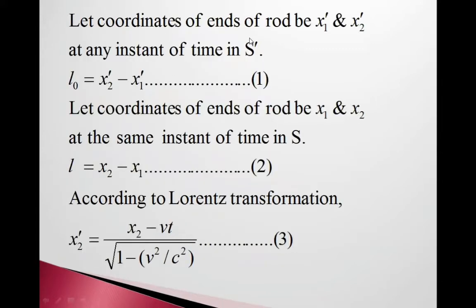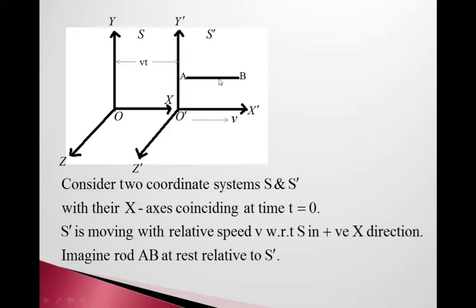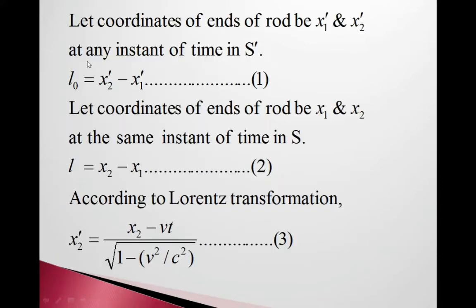Now coordinates of ends of the rod are x1' and x2' here. At any instant of time in the S' frame, the length of that rod is x2' minus x1', equation 1.